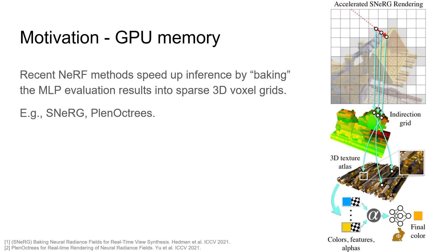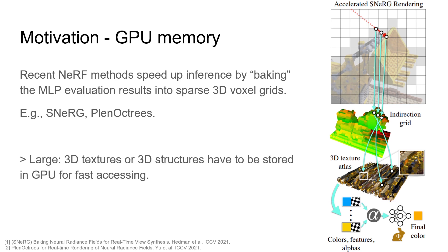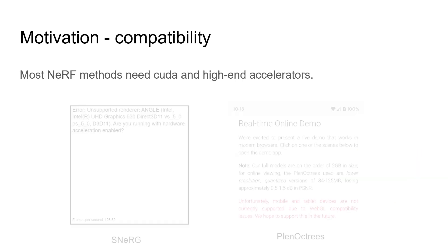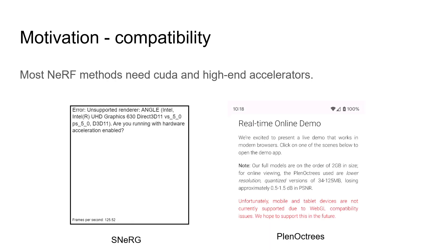Recent methods speed up inference by baking the MLP evaluation results into sparse 3D voxel grids, for example SNeRG and PlenOctrees. However, they require a significant amount of GPU memory to store the 3D data, which prevents them from running effectively on common mobile devices. In addition, most methods need CUDA and high-end accelerators, neither of which is available on mobile devices, and they have compatibility issues with many hardware platforms.